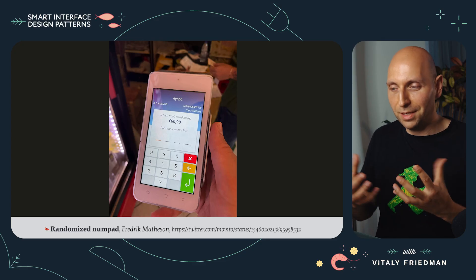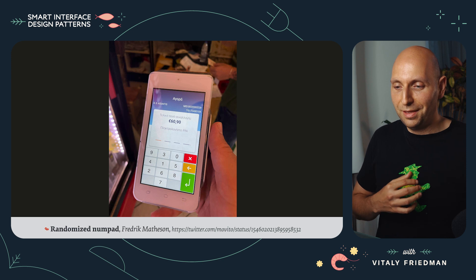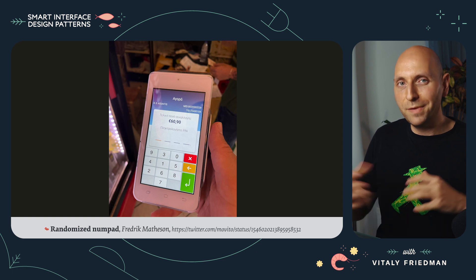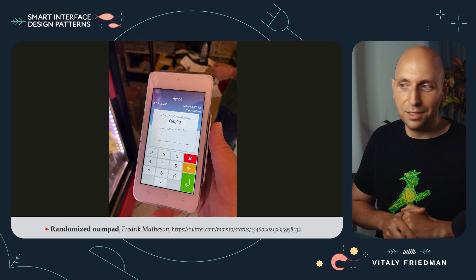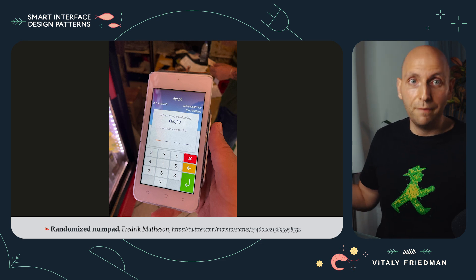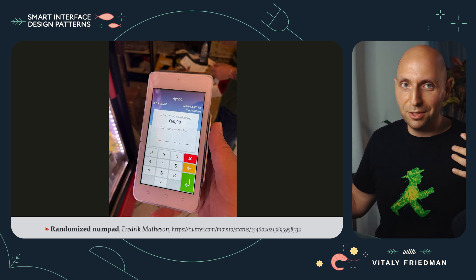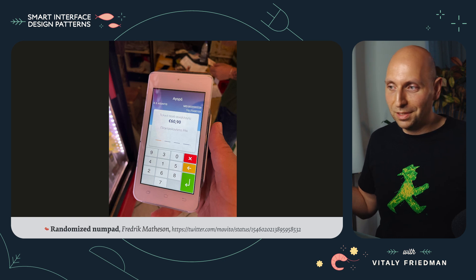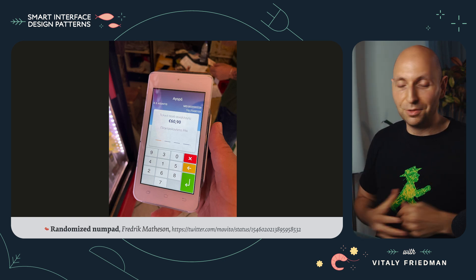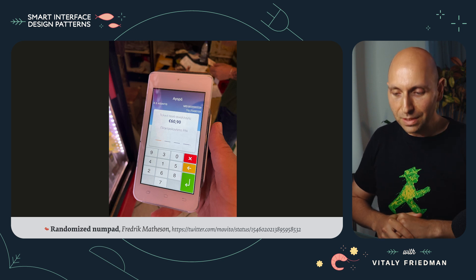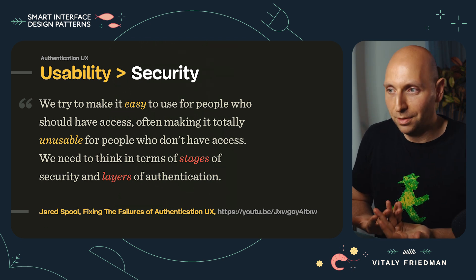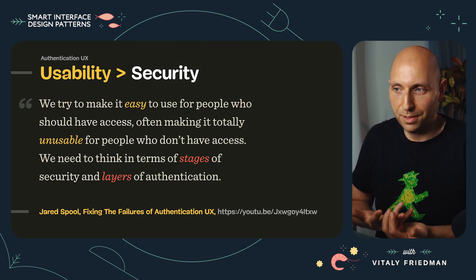All of these examples remind me of the example of a randomized numpad. Obviously, if you want to prevent brute force attacks in your software application, you might want to randomize your numpad — and that might be a good idea for security. But usability-wise, that's probably a disaster, because it's just so incredibly difficult to use and you have to really twist your mind around how to even use it. So usability is maybe way more important than security to enable security in the first place.